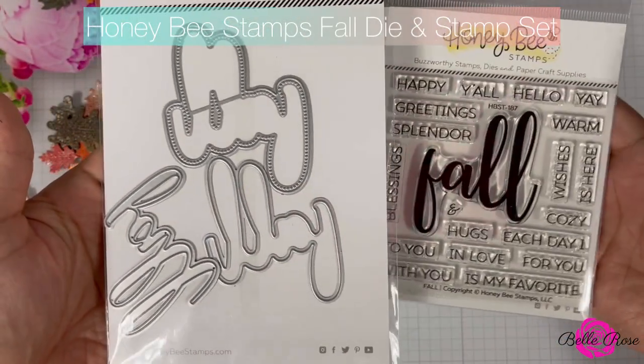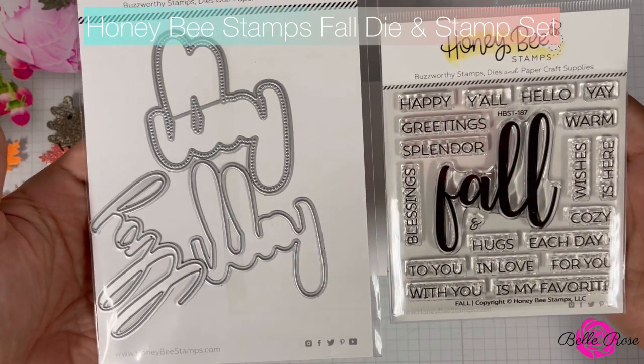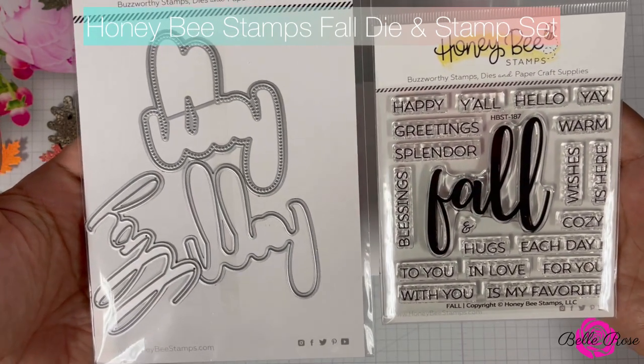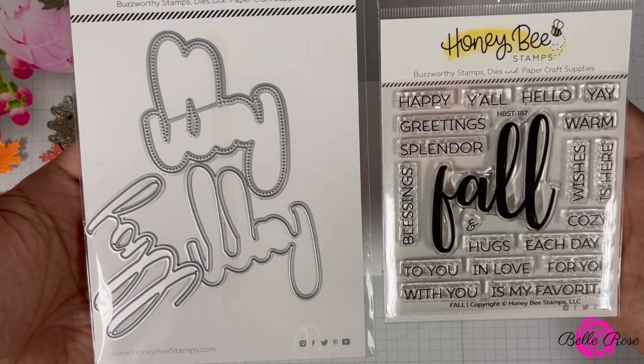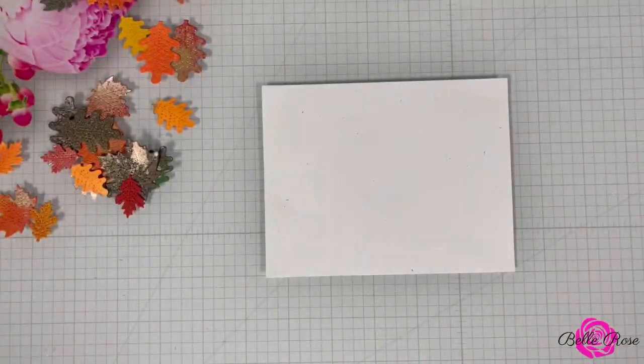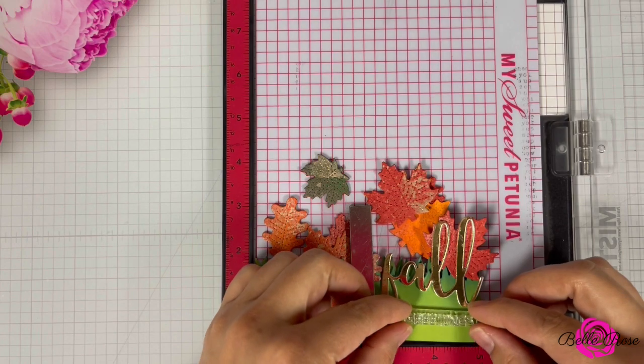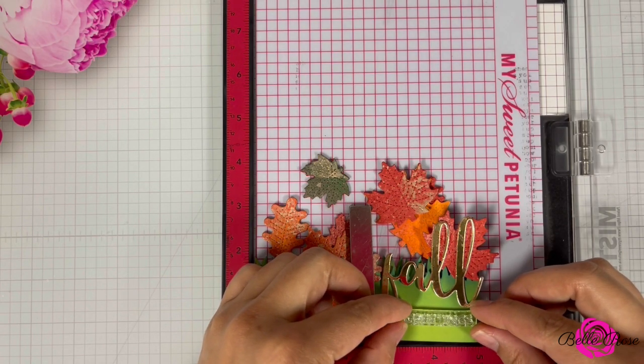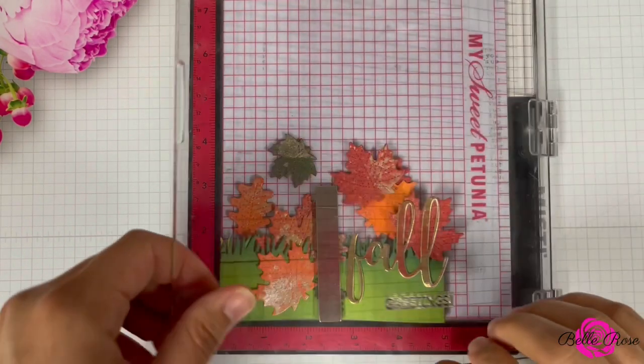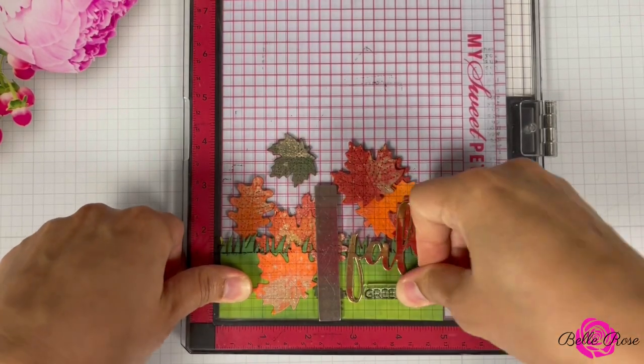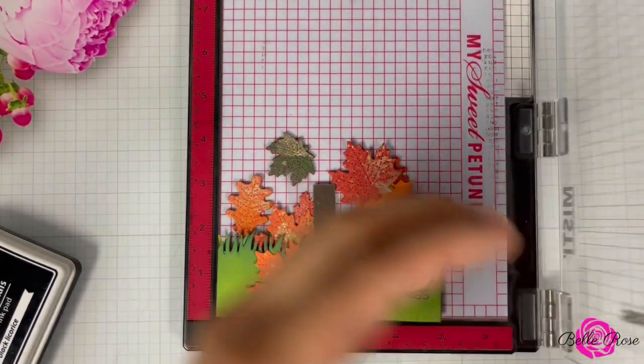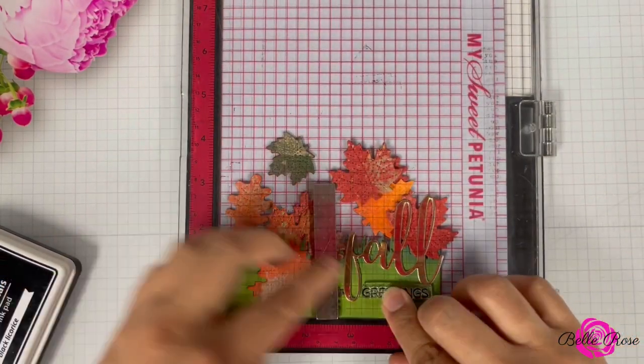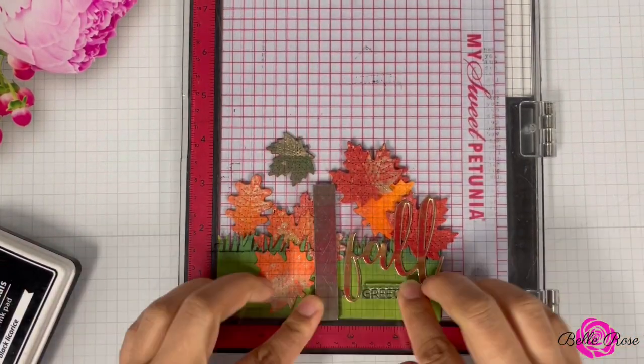The sentiment I'm using for this card is from Honey Bee Stamps. It is their Fall Die and Coordinating Stamp Set. I selected Greetings from the stamp set and from there, I'm going to position the stamp on my card base and then I'm going to ink it up and stamp it twice just to make sure I have a good impression. After that, this card is done.